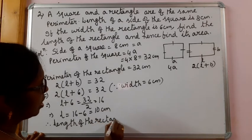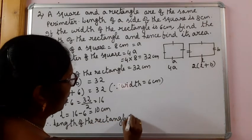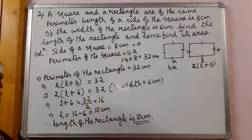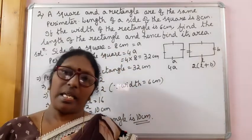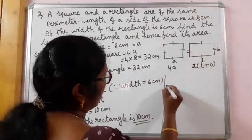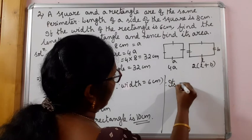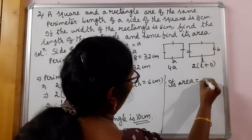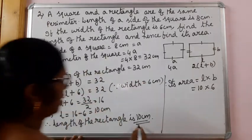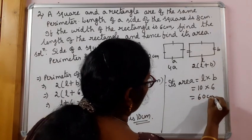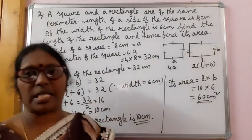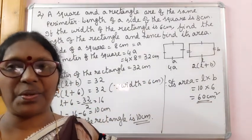It is asked to find the length and also find its area. Area of the rectangle — therefore its area is equal to length into breadth. Length we got is 10, breadth is given as 6, that gives 60 cm square. So its area is 60 cm square. Thank you.